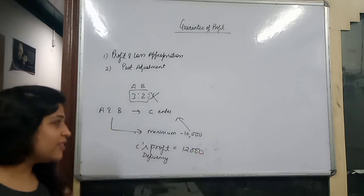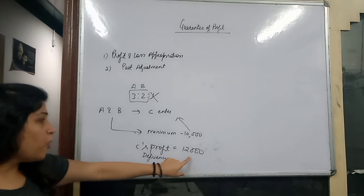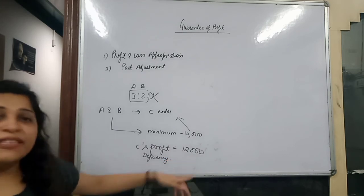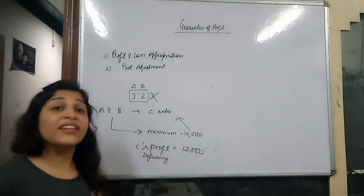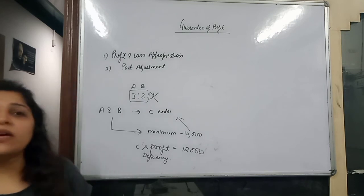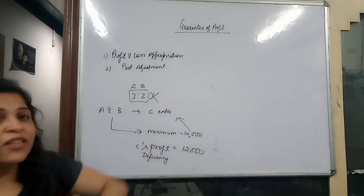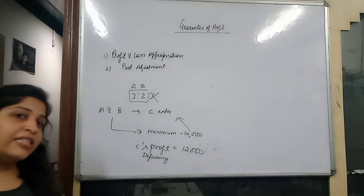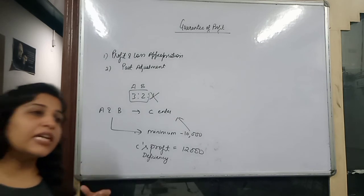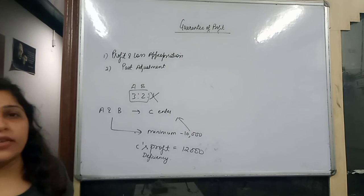Suppose we guaranteed 10,000 profit but C actually earned 12,000. This doesn't mean C gets extra. Guarantee means minimum - at least 10,000 rupees. If actual profit is 10,000 or above, the guarantee doesn't apply. We only invoke the guarantee when profit falls below the guaranteed amount.